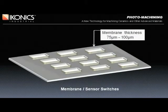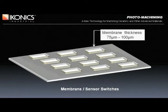Photo machining has recently met the challenge of creating very thin membranes for use in sensor applications. Selectively thinning certain areas of the substrate is critical and must be controlled within microns in order to perform well. The requirement shown here was to thin the membrane areas to 75 microns and control them within plus or minus 5 microns. Process control is paramount, not only for one part, but for repeatability between parts.